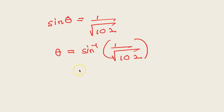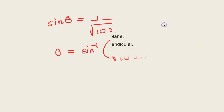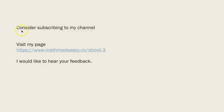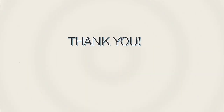Note that when finding the angle between a line and a plane, the formula is written in terms of sine. To summarize, we have covered: finding the angle between two planes, finding the angle between a line and a plane, and checking if two planes are parallel or perpendicular. Do consider subscribing to my channel or visit my page — I would love to hear your feedback. Thank you.